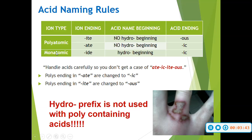Now if you have a polyatomic ion and it ends in IDE — like chloride — you are going to use the prefix hydro in the beginning, and then again you are going to change the ending to IC. Something to help you remember the rules for naming these acids is: handle acids carefully so you don't get a case of aticitis.